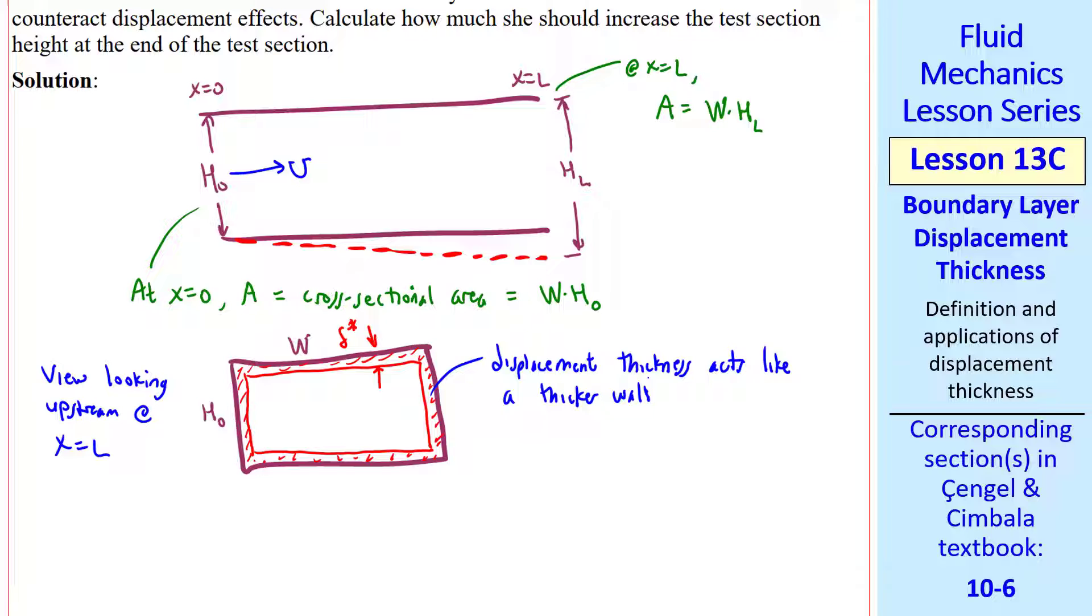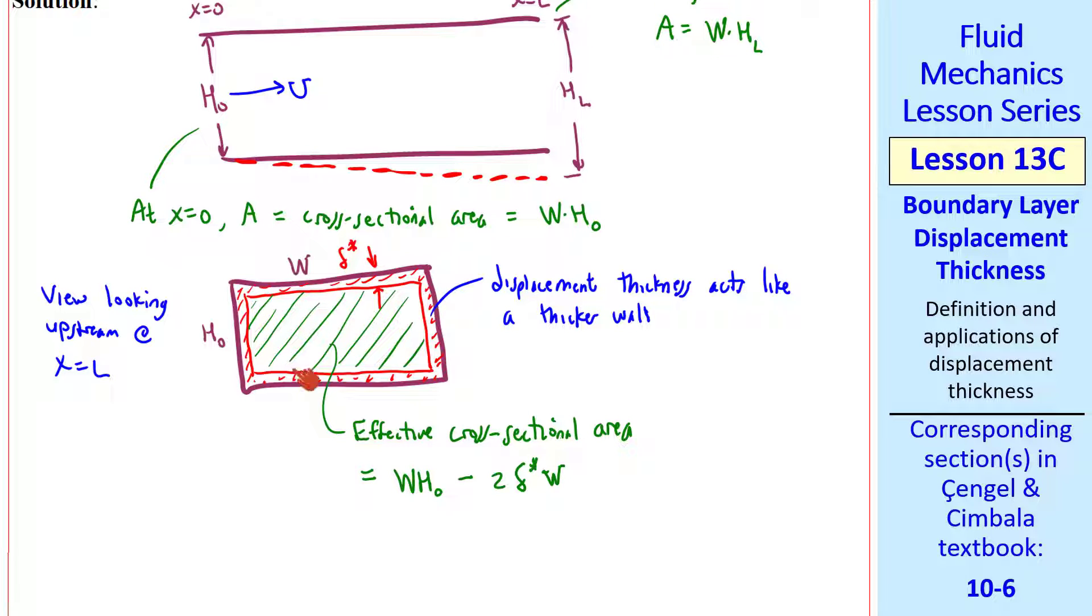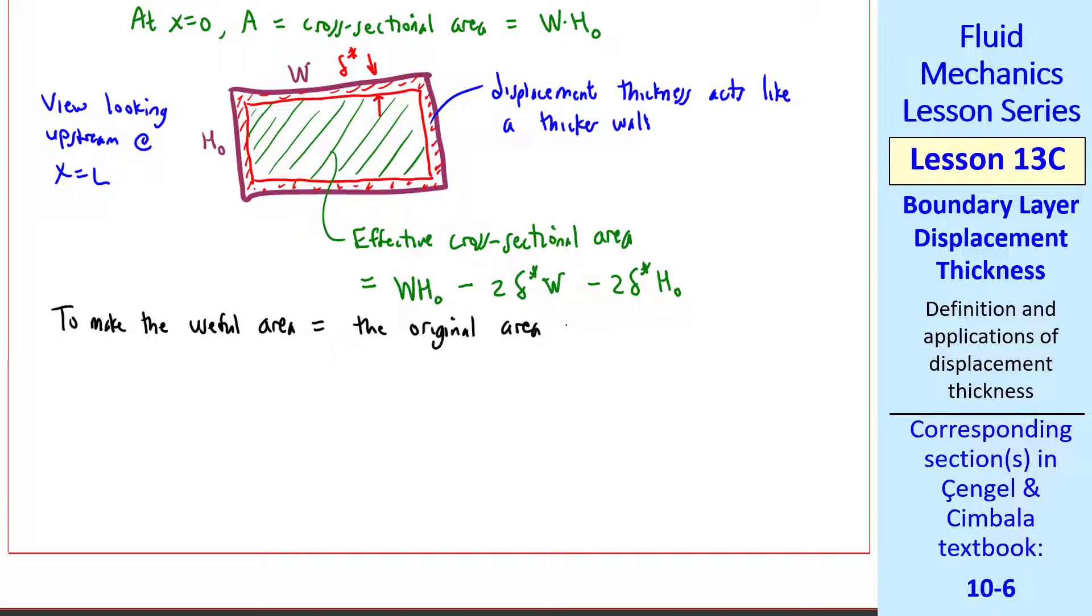As we discussed, the displacement thickness acts like a thicker wall. So the effective cross-sectional area is the original area minus the displacement thickness effects. So it's W H0 minus 2 delta star W, since there's displacement effects on both the top and the bottom, minus 2 delta star H0, since we're accounting for both sidewalls as well. To counteract this displacement effect, we tilt the bottom wall. To be more precise, it's not a straight line, but rather, it tilts according to delta star and according to this equation. To make the useful area equal the original area, we must add back this lost area due to displacement effects.